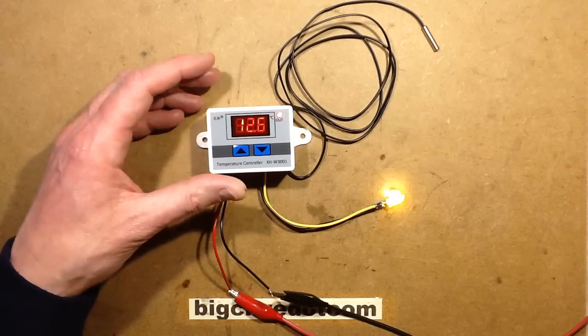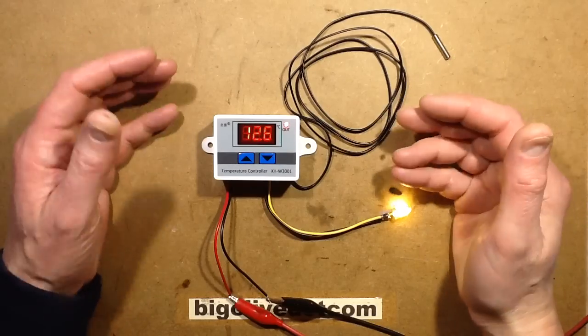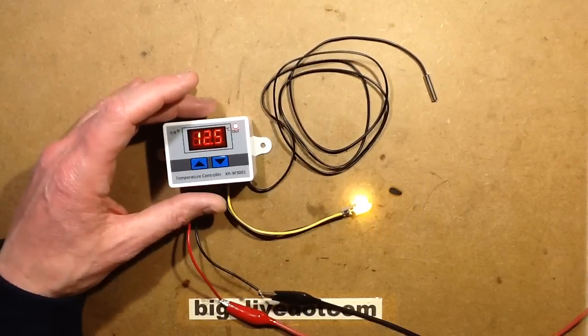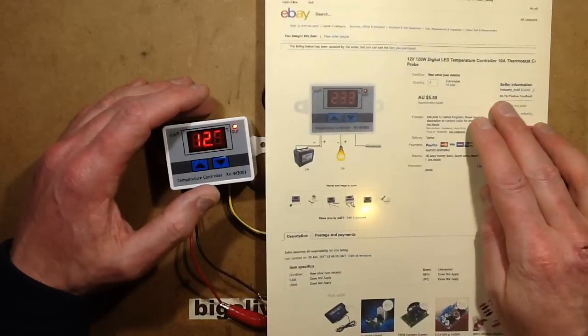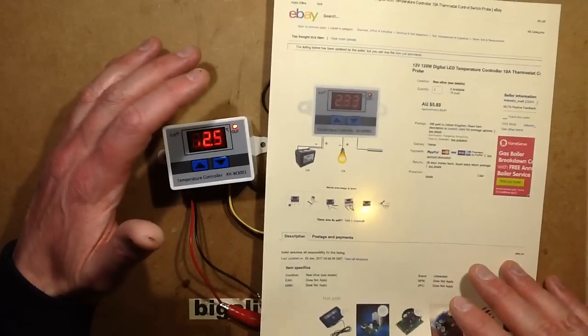One of the nicest things about eBay is that you can buy industrial control modules from China that are presumably used in the Chinese factories. In this case, this one came from a supplier called Industry_mall and they just seem to do industrial components. It's really good.